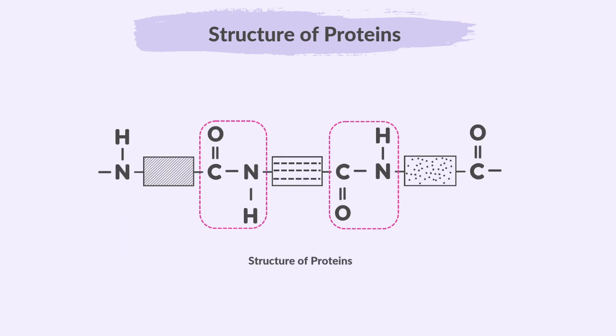This is the structure of a protein, a type of polyamide formed through the condensation polymerization of amino acids. You may notice that the positions of the functional groups alternate between the top and bottom in each amino acid link.